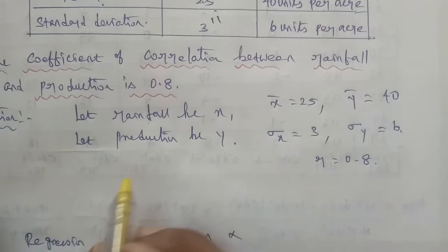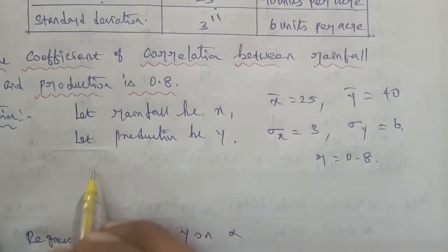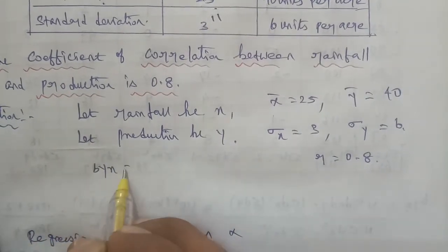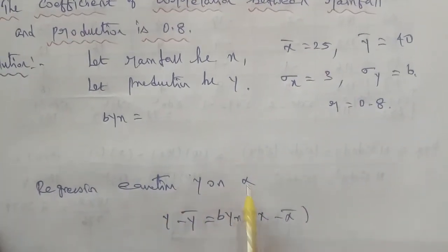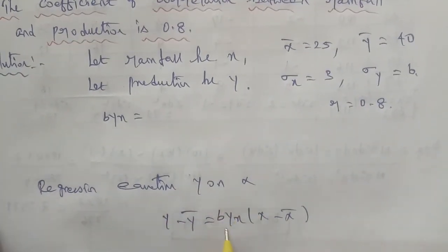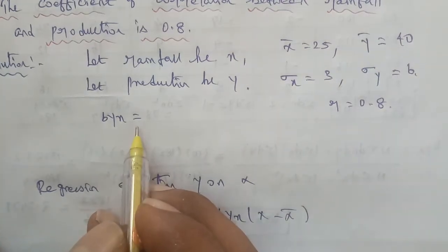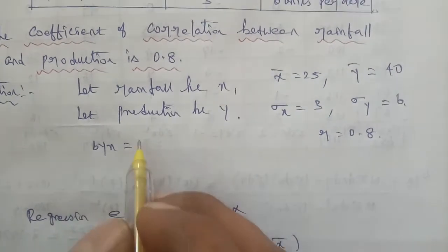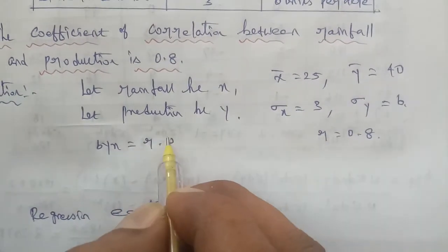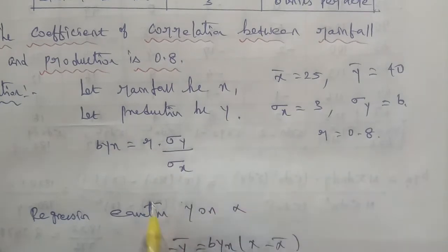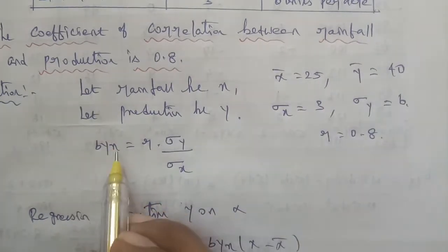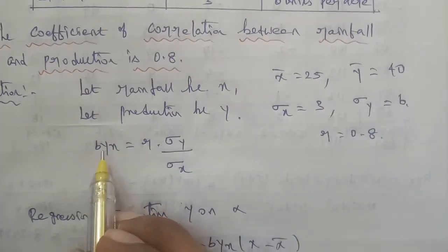So here we need to find the formula for b-y-x. The regression coefficient b-y-x is used in the regression equation y on x. The formula for b-y-x is r into sigma y divided by sigma x.